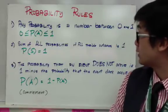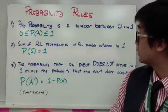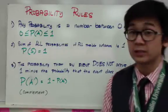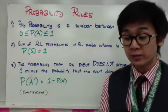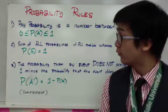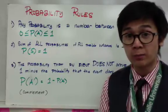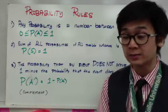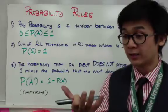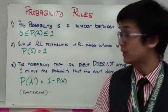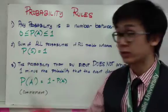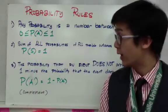The second property is that the sum of all probabilities of all possible outcomes is equal to 1. If you add up all the possible probabilities in a sample space, they will all equal 1.